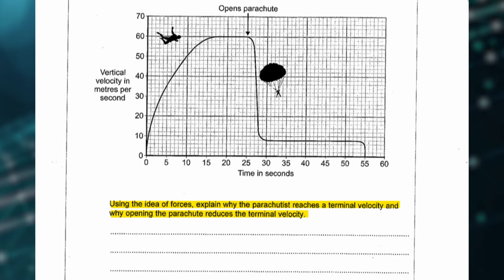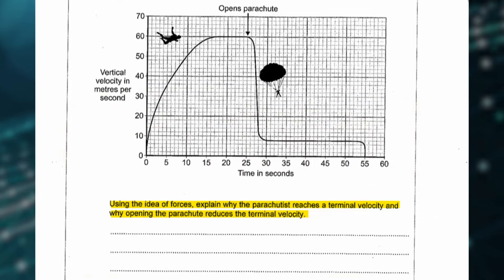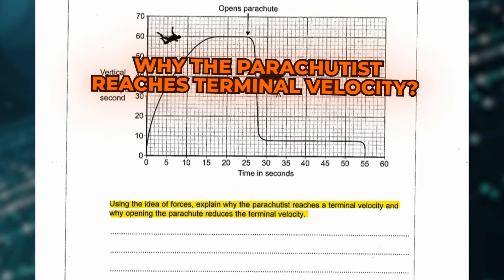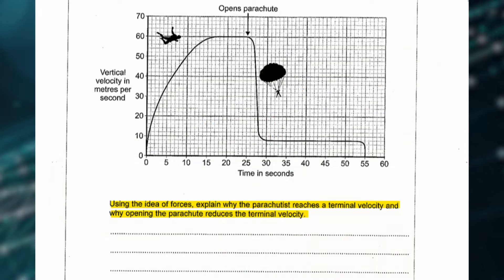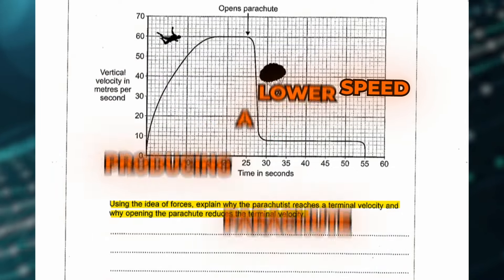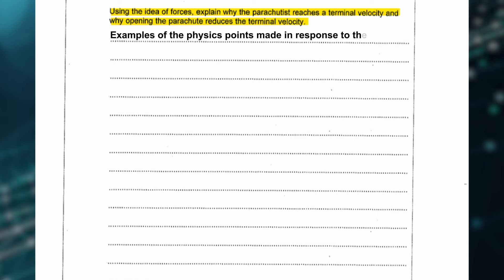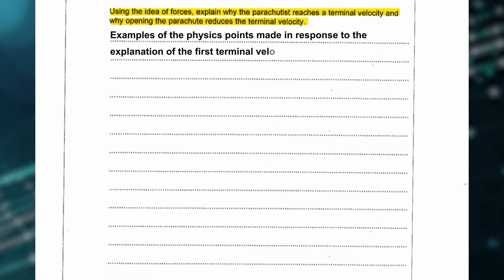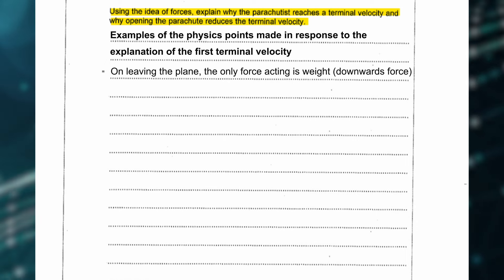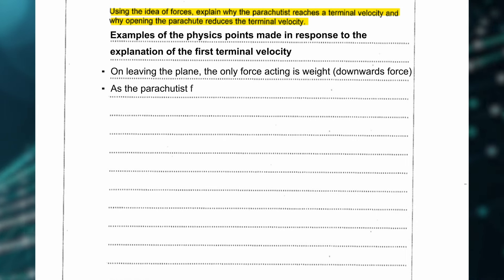To get 5 to 6 marks for this question, you need a clear and detailed explanation as to why the parachutist reaches terminal velocity, and also a reasoned argument for the open parachute producing a lower speed. In terms of physics points for the first terminal velocity, you could have put: on leaving the plane, the only force acting is weight, so the downwards force.